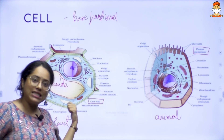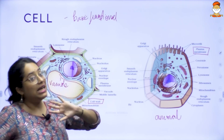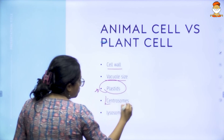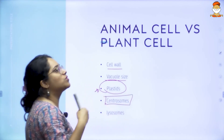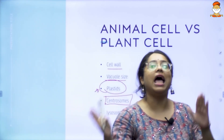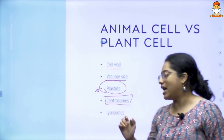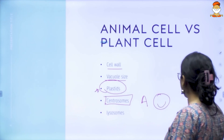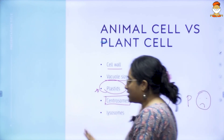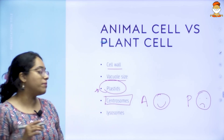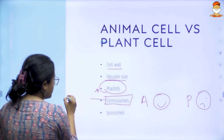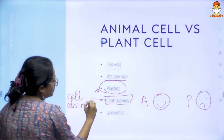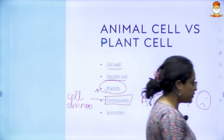So plastids: plant cell has it, animal cell doesn't. Moving forward — centrosomes. Centrosomes is something which the animal cell has and the plant cell doesn't have. Your animal cell has centrosomes, your plant cell doesn't. Centrosomes are primarily an organelle that helps in cell division.